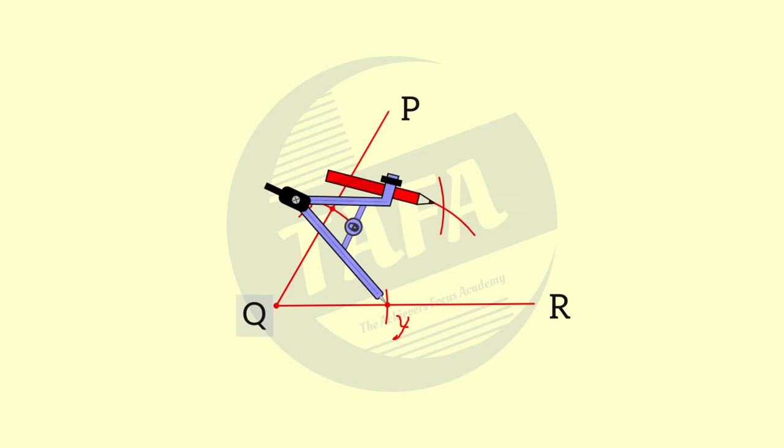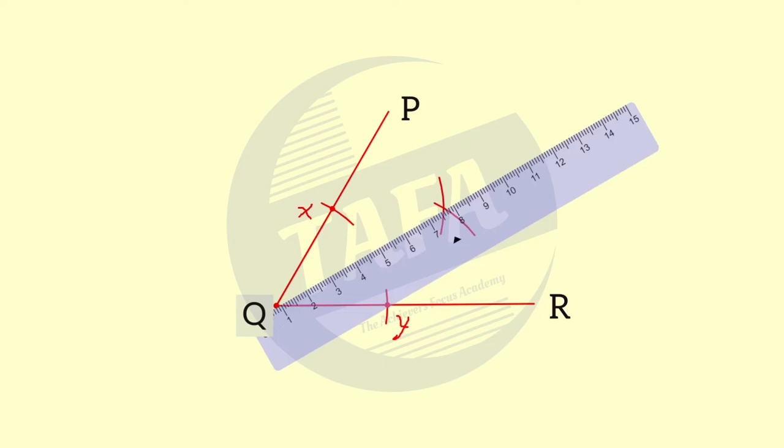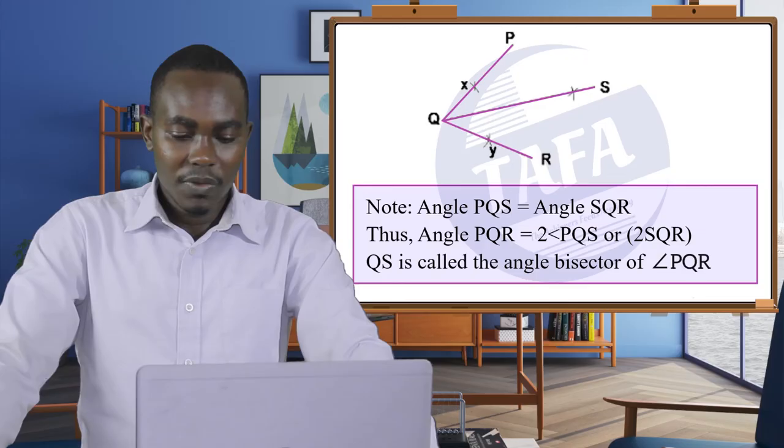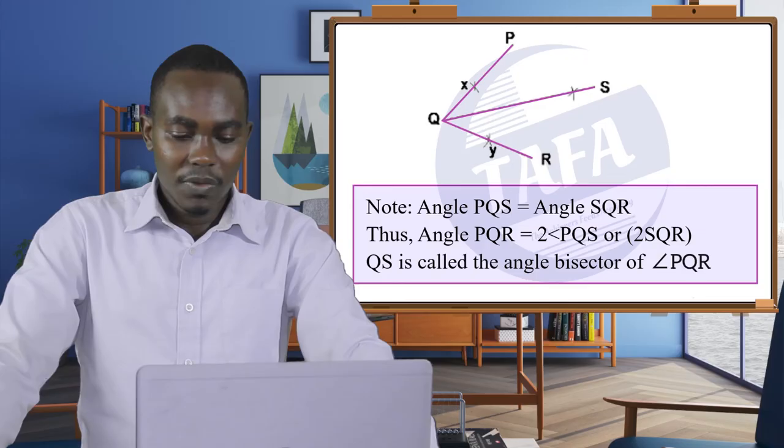If we measure angle PQS, it is going to be equal to angle SQR. And thus angle PQR is equal to twice angle PQS or twice angle SQR. So QS is called the angle bisector of angle PQR. QS is an angle bisector which bisects the angle into two equal parts.